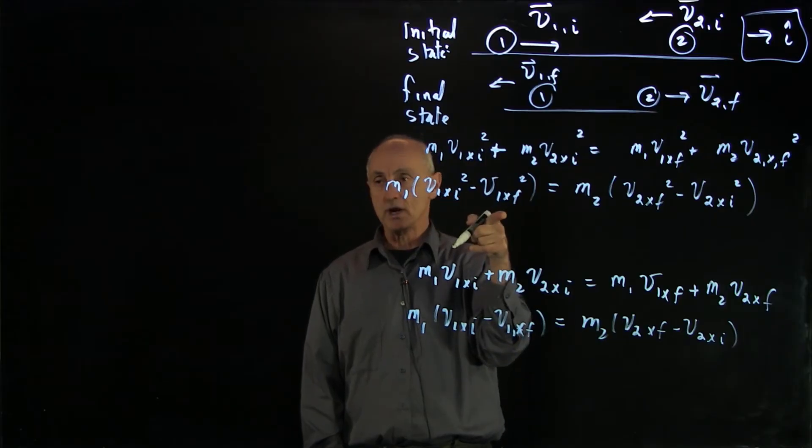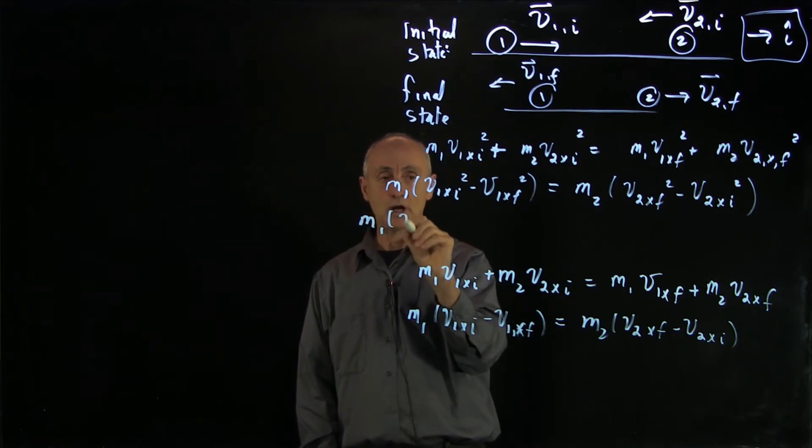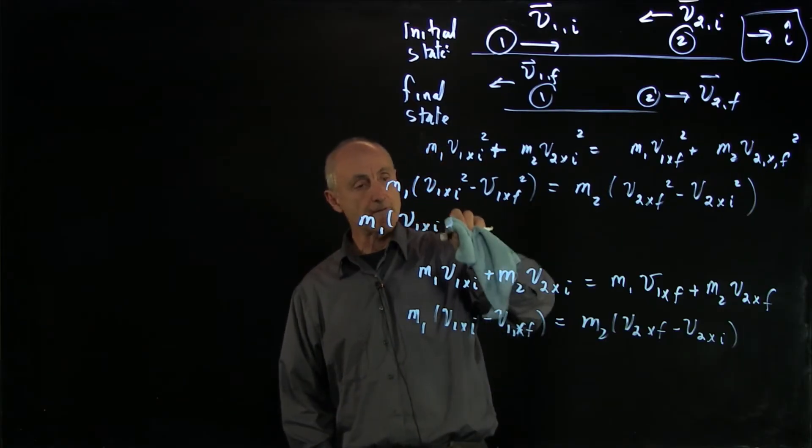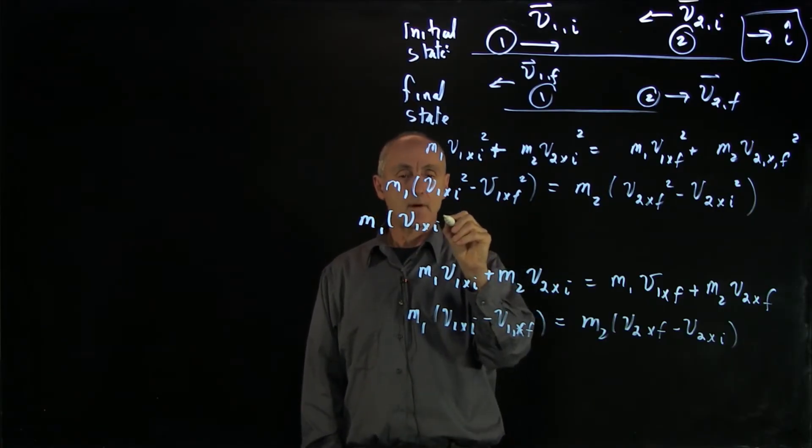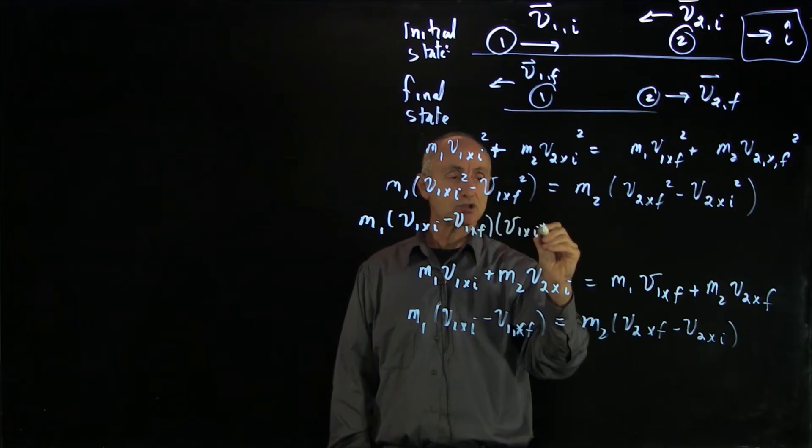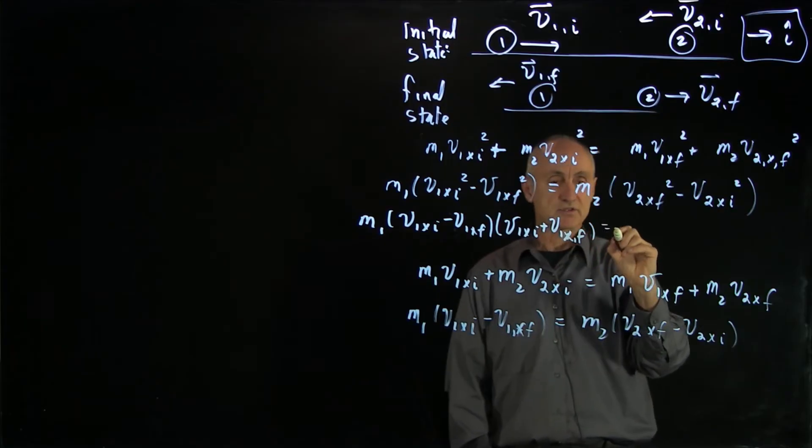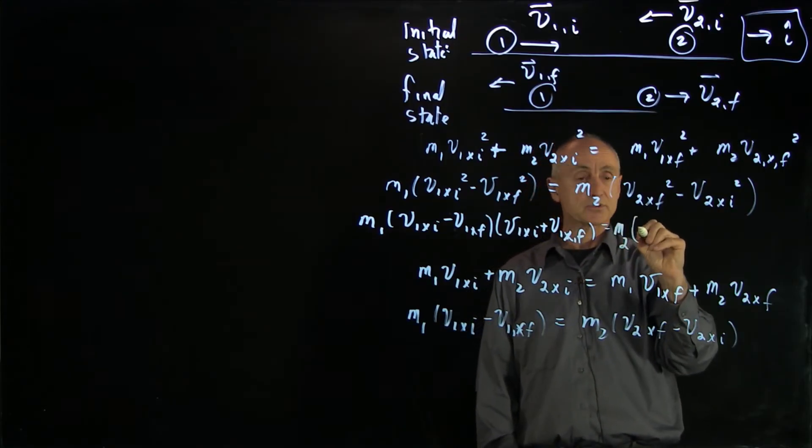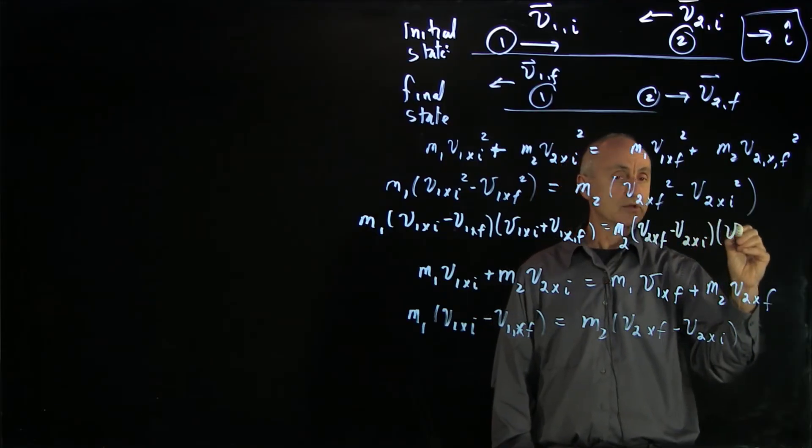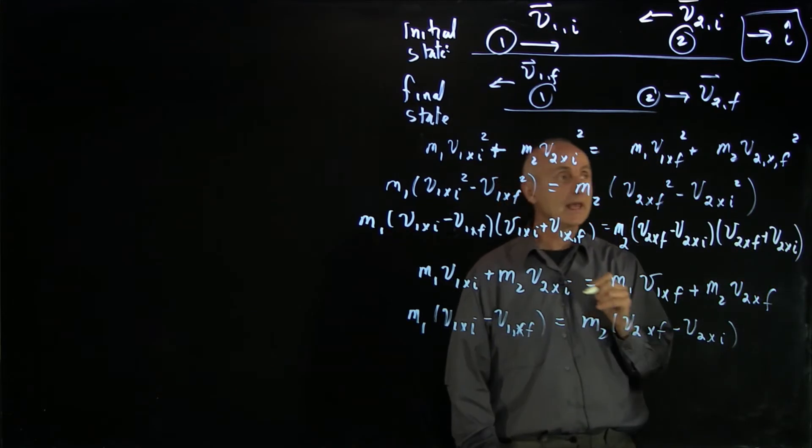This is a squared minus b squared, which factors into a plus b times a minus b. So let's give ourselves a little room. m1 v1x initial minus v1x final times v1x initial plus v1x final. Factored that term. We have the same factoring on the other side, so it's just identical: v2x final minus v2x initial times v2x final plus v2x initial.